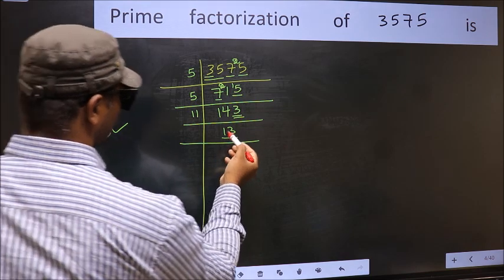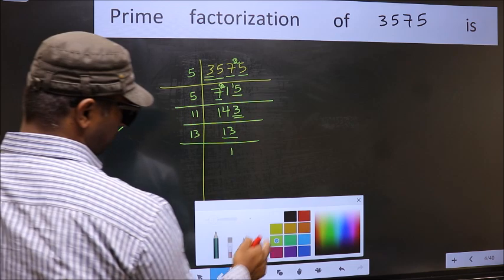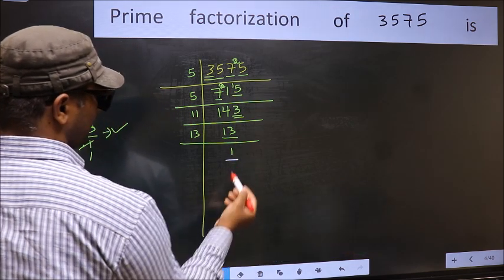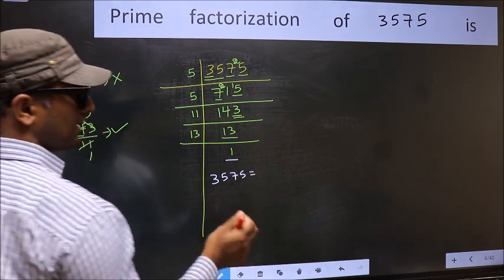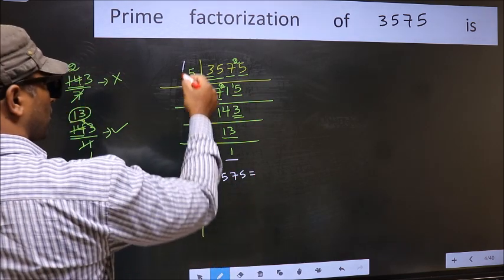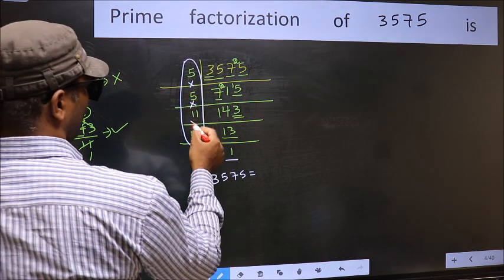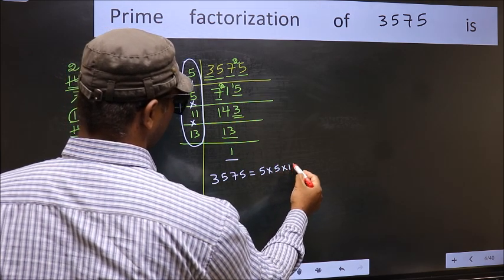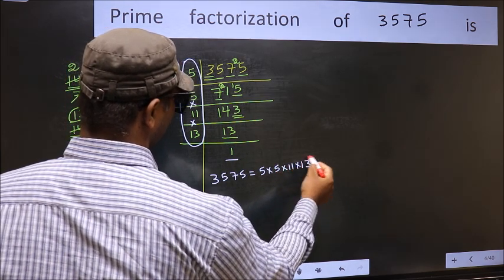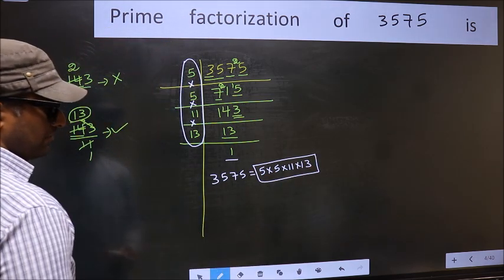Now we have 13. 13 is a prime number, so 13 times 1 is 13. So we got 1 here. So the prime factorization of 3575 is the product of these numbers. That is 5 times 5 times 11 times 13. This is the prime factorization of 3575.